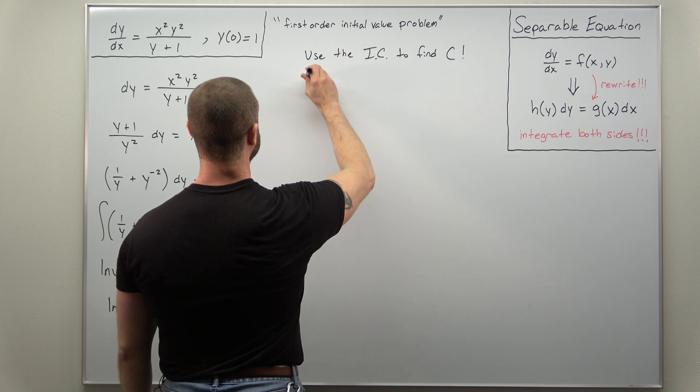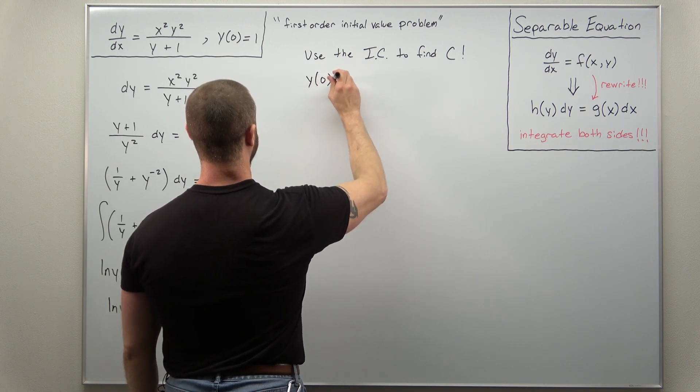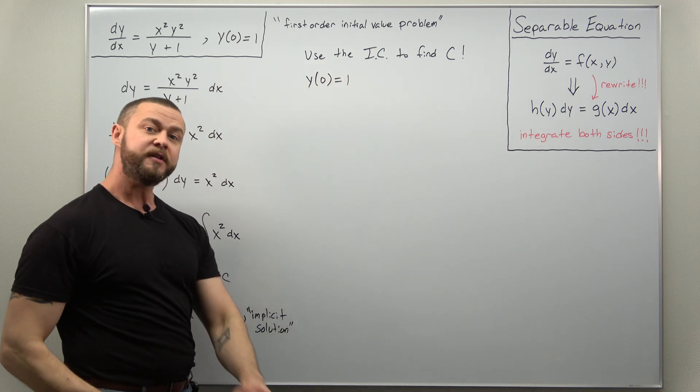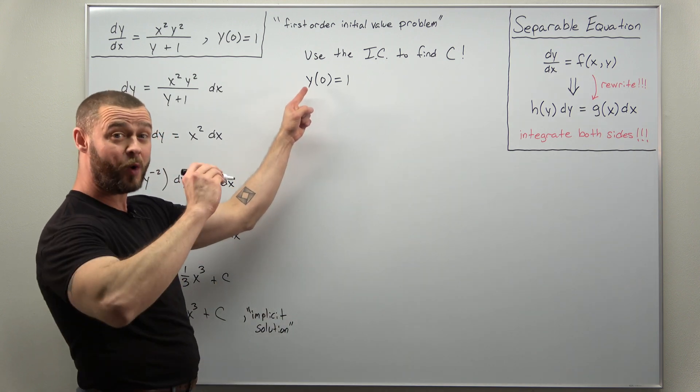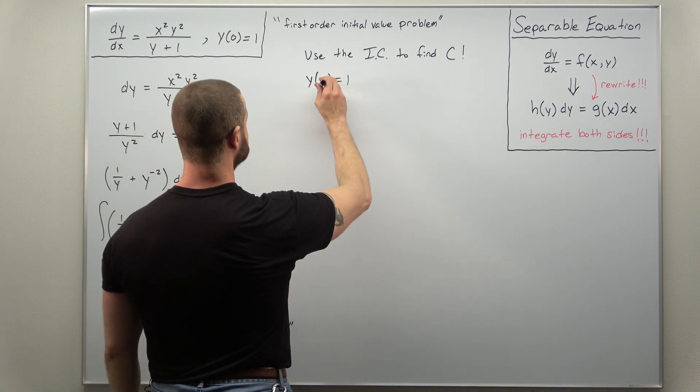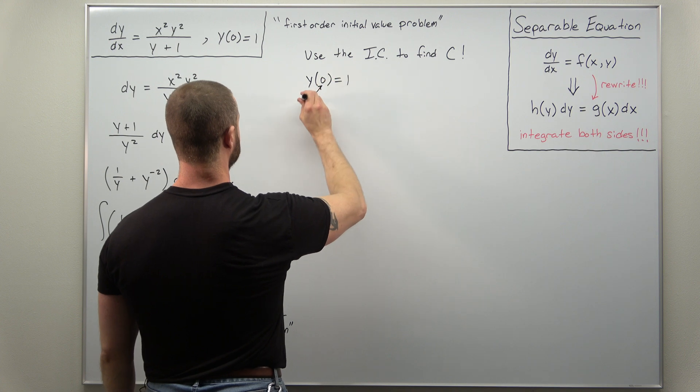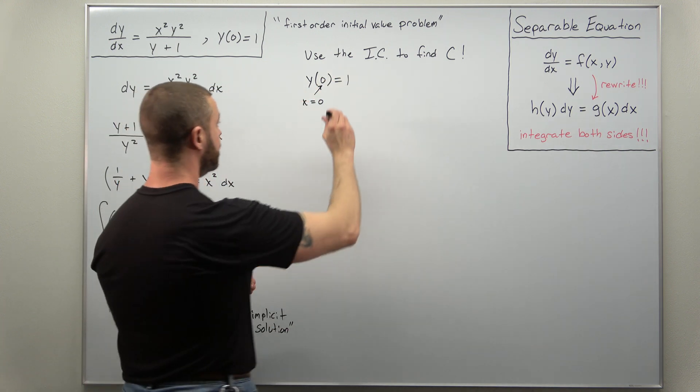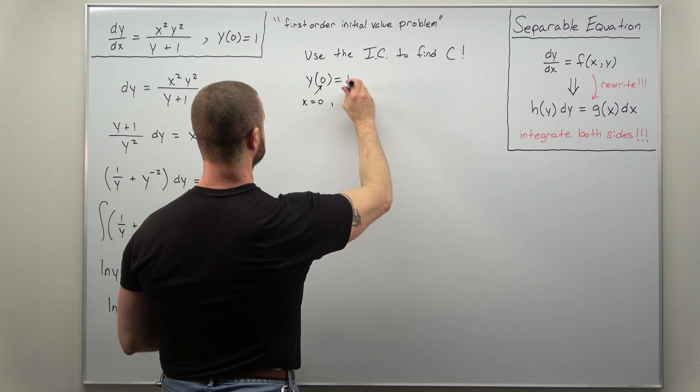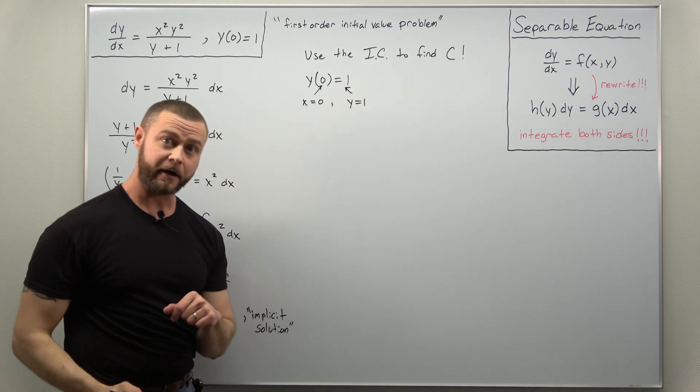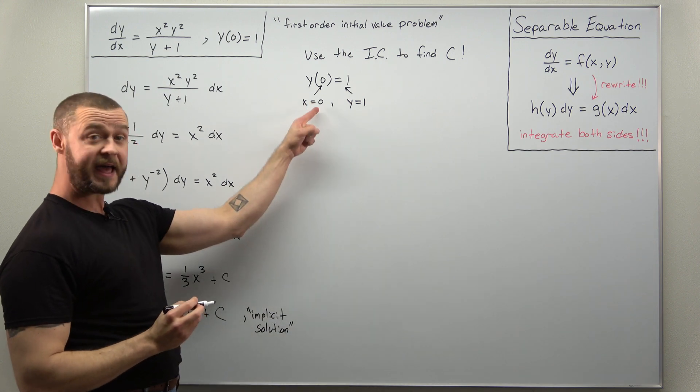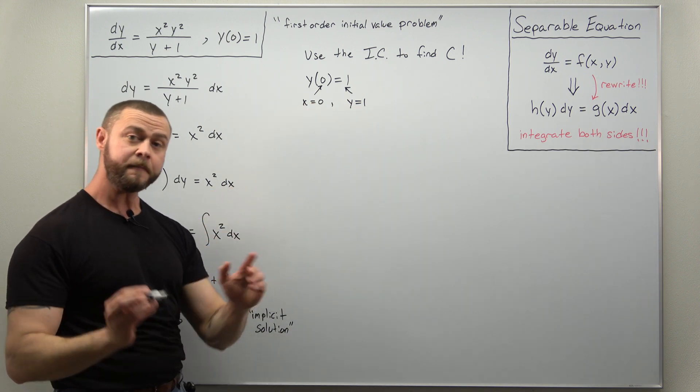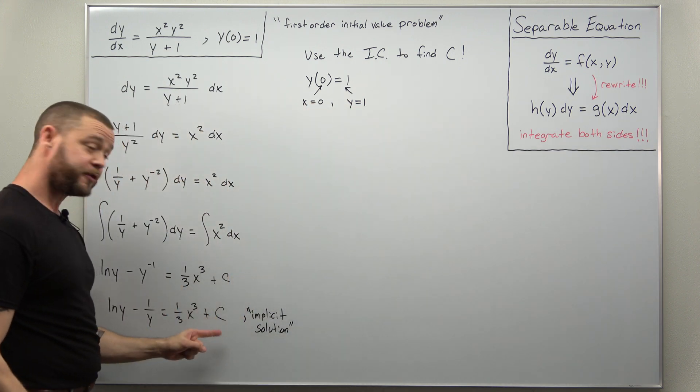y of zero equals one, the notation here is indicating we're thinking of y as a function of x. So the input here is telling us our x value is zero and then the output that's your y value. So in other words, when we plug in x is zero and y is one, we should be able to determine the value of c.